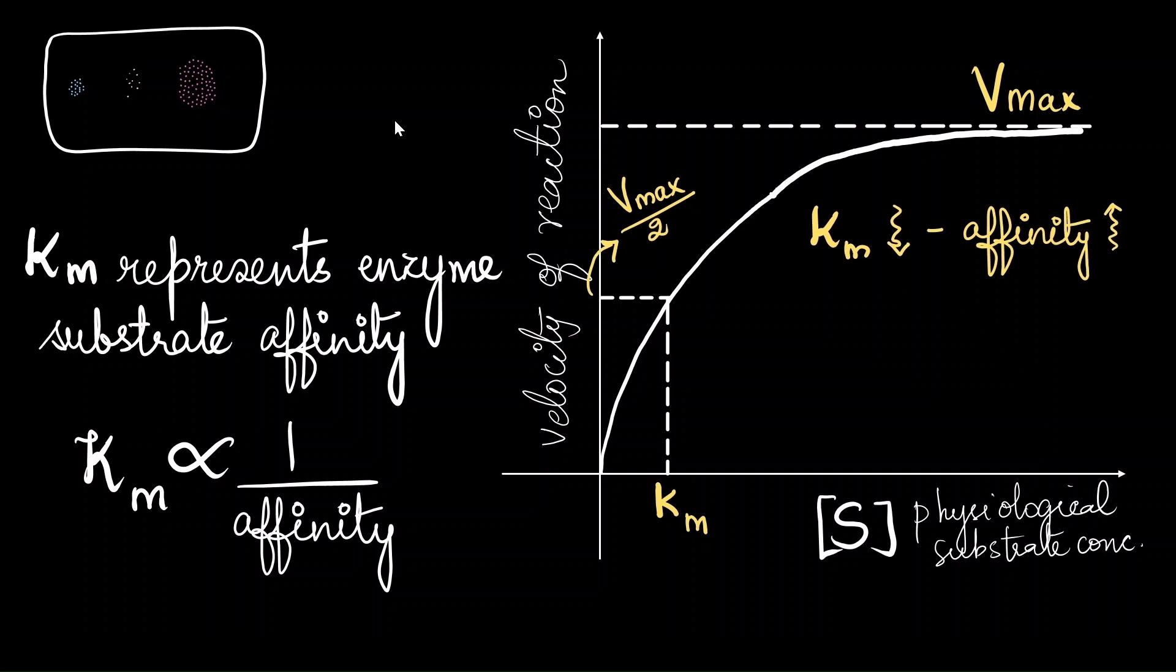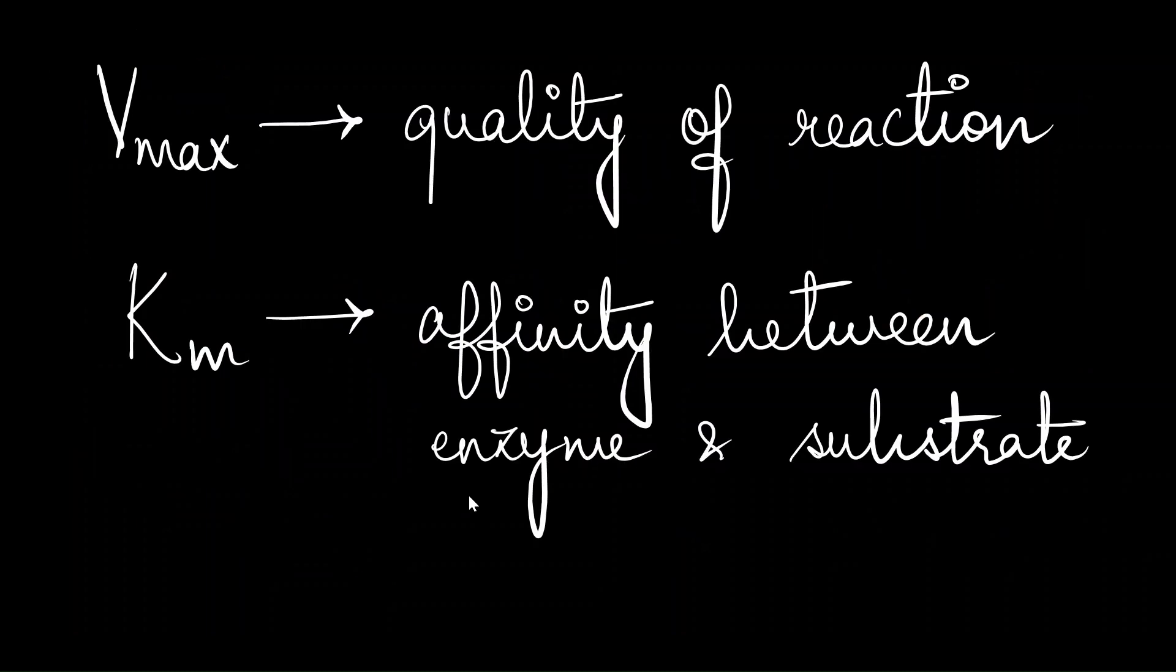Km represents the enzyme substrate affinity and it is inversely proportional to the affinity. When Km is low, there is more affinity between enzyme and the substrate. And when Km is high, the affinity is lower. The two takeaways are that Vmax represents the quality of the reaction, how good the enzyme reaction is proceeding. Km represents the affinity between the enzyme and the substrate.